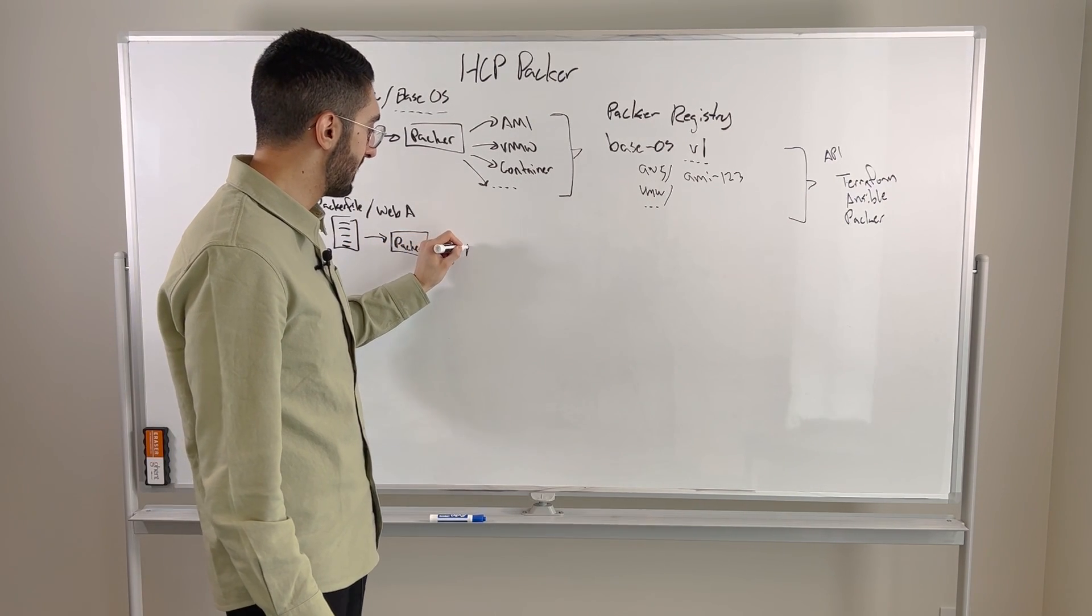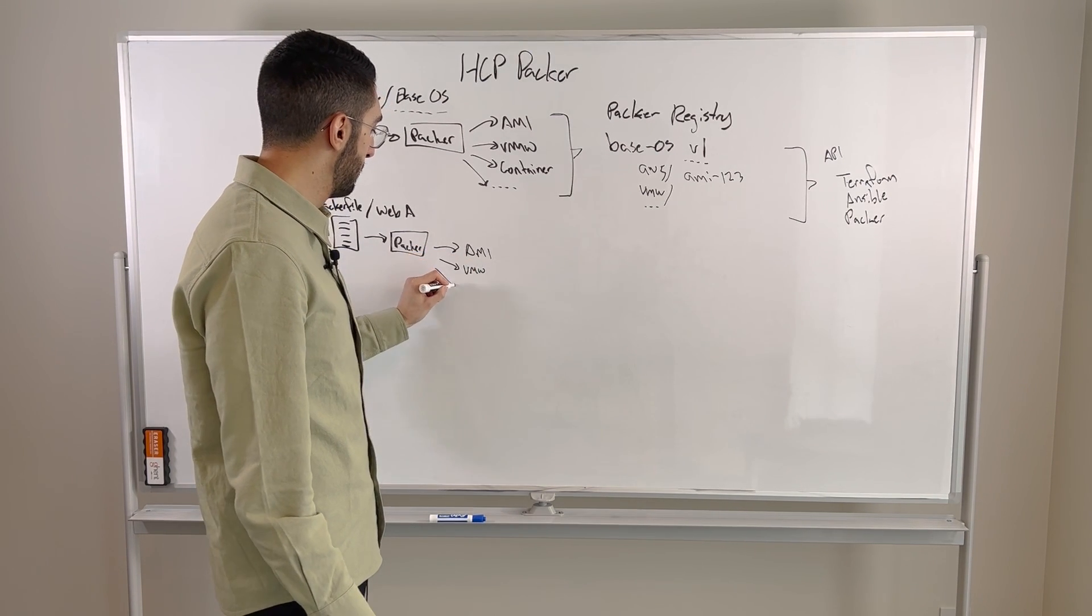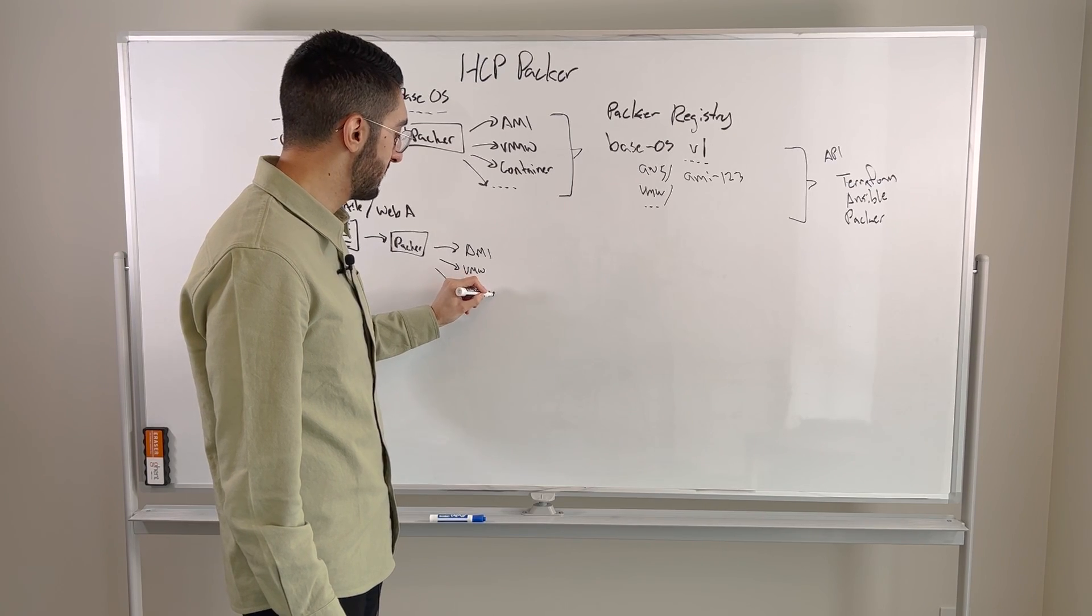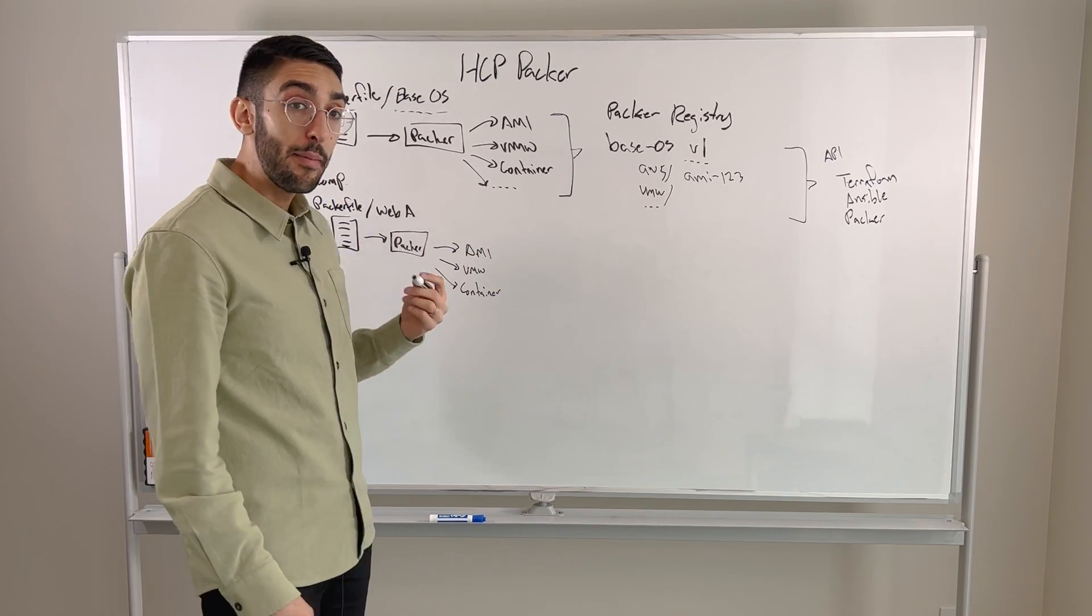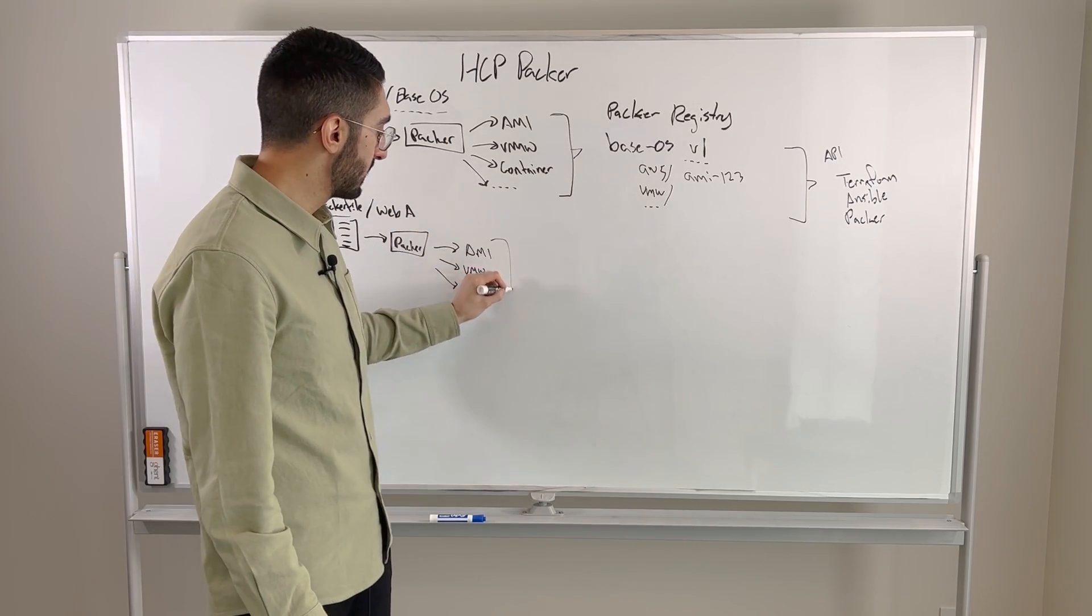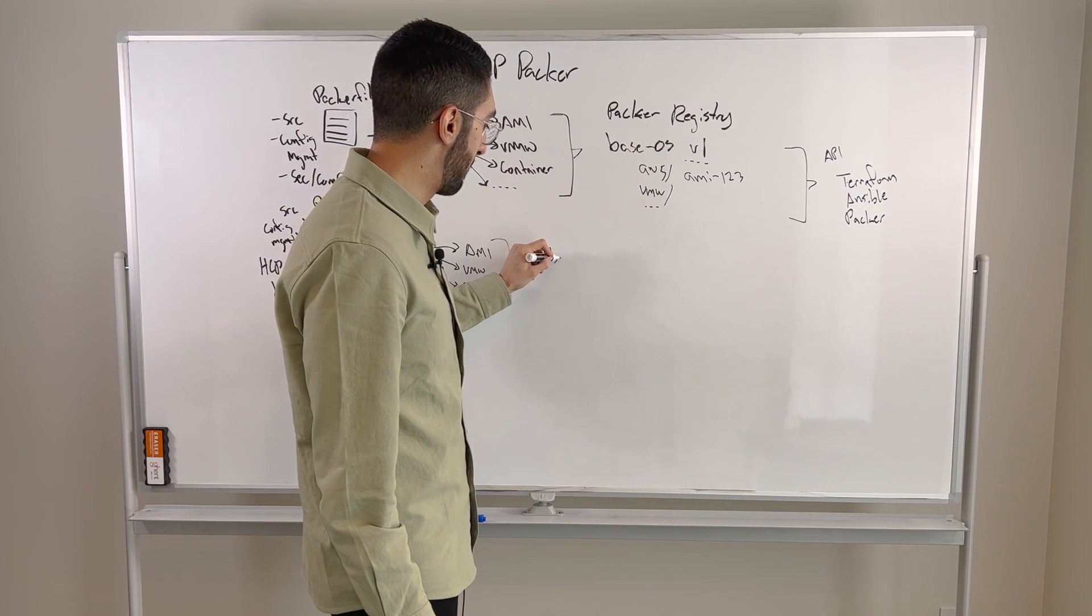That's then going to emit a set of these images. So I might have an AMI once again and a virtual machine image and then a container. So I'm going to build all of these. But now these are the web app that we've built as opposed to the base image. And now we're going to do the same thing. We'll take these and we'll publish it to that same registry. We'll call this web app A.